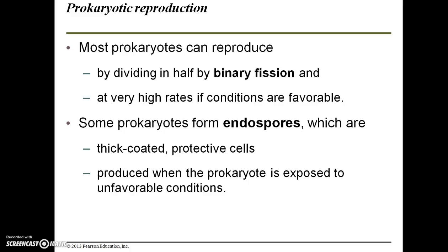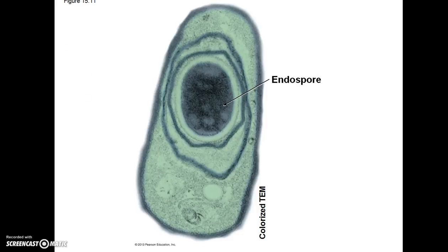Most prokaryotes can reproduce by dividing in half by binary fission, and at very high rates if conditions are favorable. Some prokaryotes form endospores, which are thick-coated protective cells produced when the prokaryote is exposed to unfavorable conditions — essentially a dormant stage. This is an example of an anthrax bacterial cell, Bacillus anthracis, which causes anthrax in cattle, sheep, and humans. The endospore is actually a second cell inside the main cell.